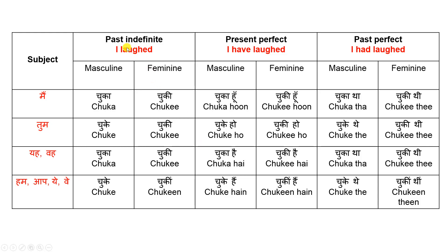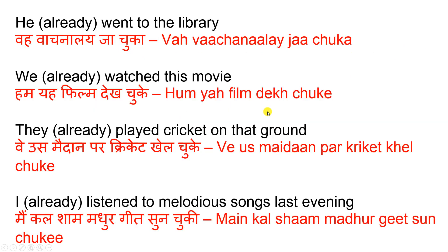Let us take a few examples in each category and see how it works. 'He went to the library' — if the meaning is 'he already went to the library,' then in Hindi it is 'Vah vachanalai ja chuka.' 'Vah' is he, 'vachanalai' is library, 'ja' is the root verb meaning go, and 'ja chuka' means already went.